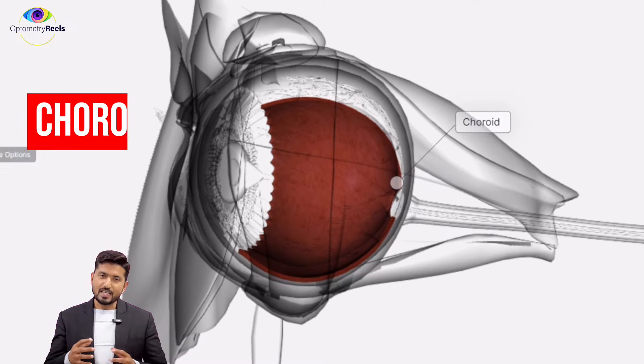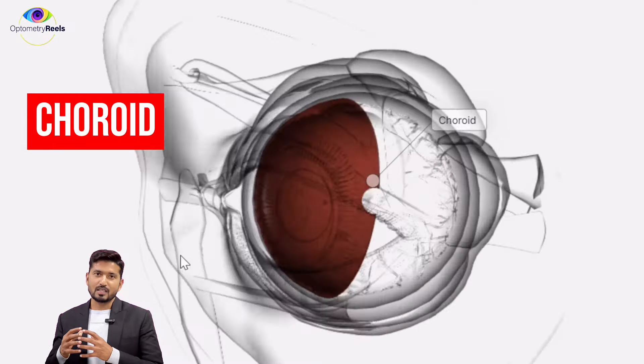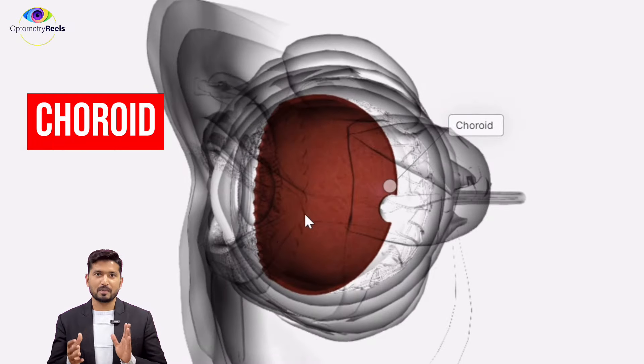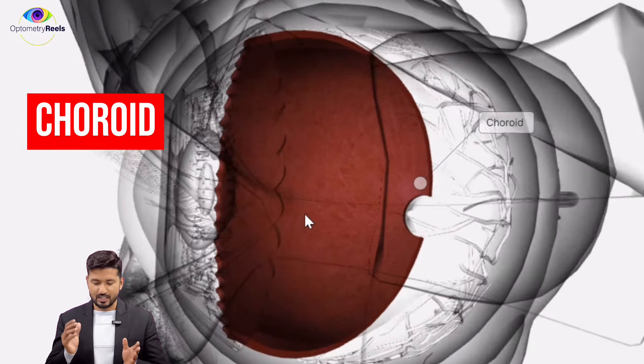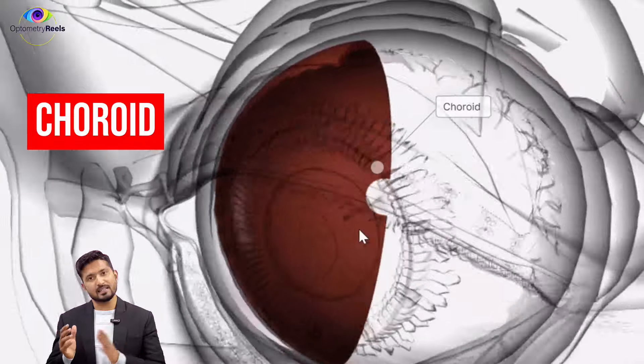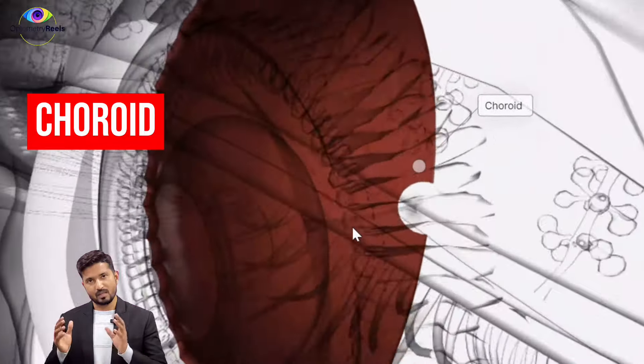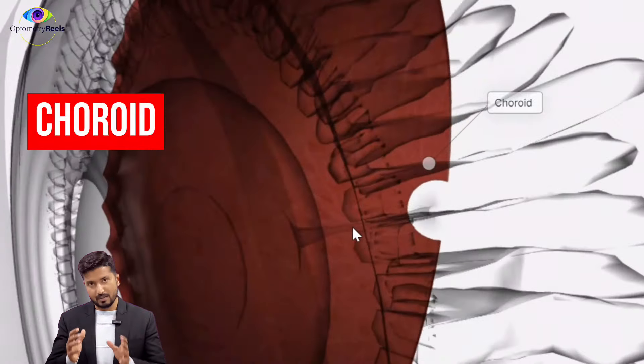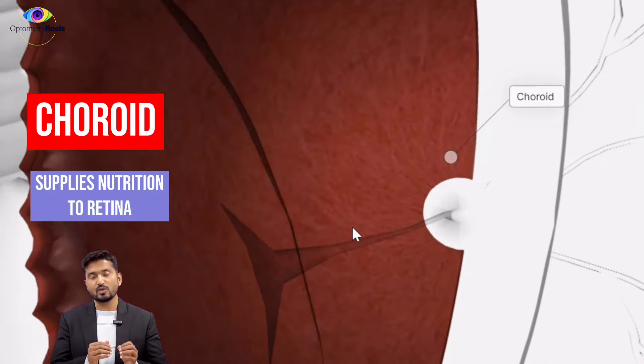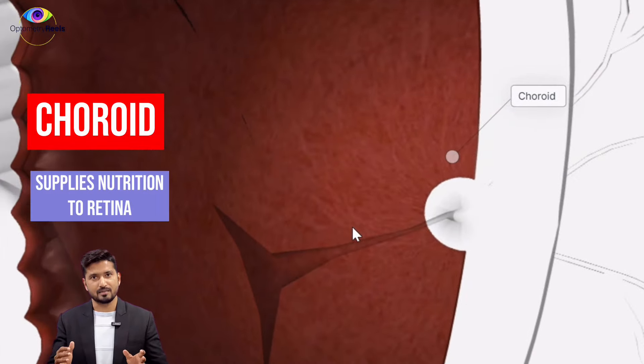The choroid is the vascular tissue of the eye, present between the sclera and the retina, and it supplies nutrition to the retina.